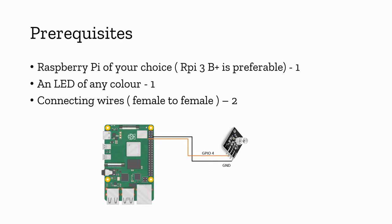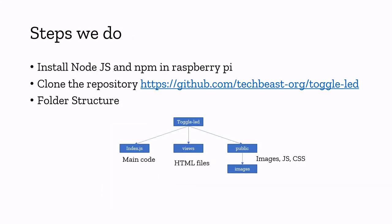We have successfully connected our device and made our setup. Before we get into programming, here are the steps. First, install Node.js and npm on your Raspberry Pi. Before that, you need to set up your operating system — download the Raspbian image and burn it into your Raspberry Pi. A lot of tutorials are available on how to burn an OS onto an SD card and boot your Raspberry Pi. Then, clone the repository — the source code is available on this GitHub repository.